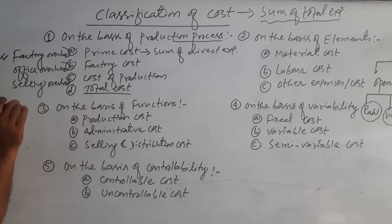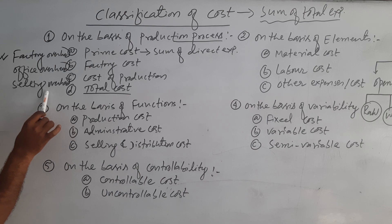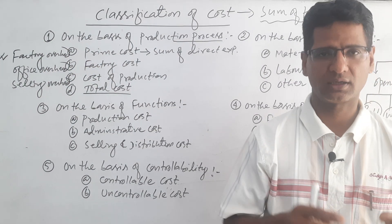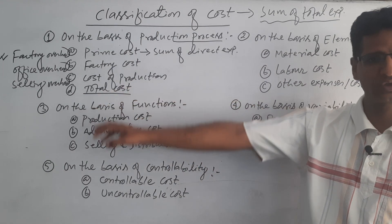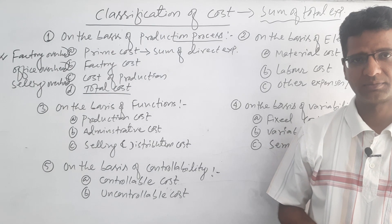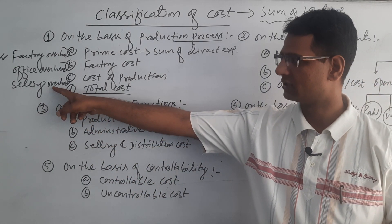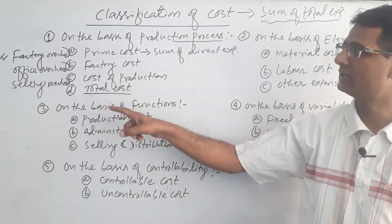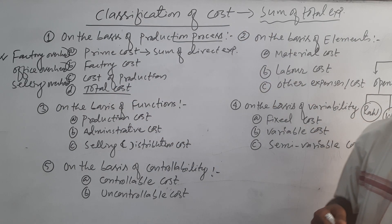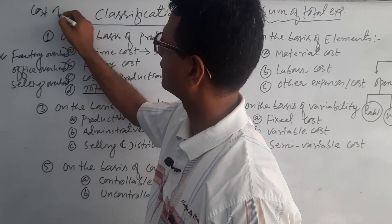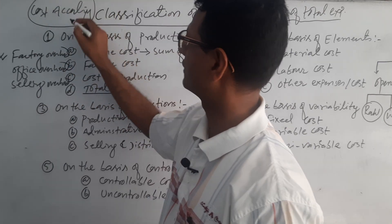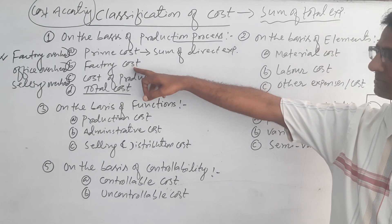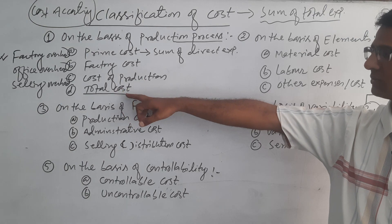Then, to get the total cost, after cost of production we have to add selling and distribution overhead, because all the goods and services are produced for sales purposes. If there are different expenses for promotional activities, advertisement, or salesman commission, such expenses are included within selling overhead. Cost of production plus selling overhead equals total cost. The main objective of cost accounting is to determine total cost — that is, prime cost plus factory cost, which gives cost of production, plus selling and distribution overhead, which gives total cost.